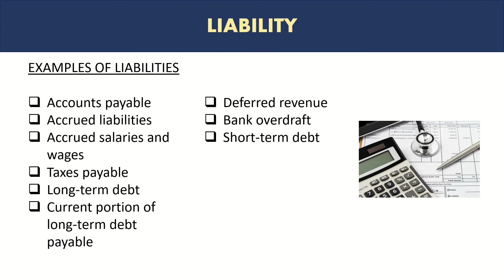Accrued liabilities are recorded in accordance with the accrual concept, which we will cover in a future video. This represents expenses that have been incurred but for which we have not yet received invoices or bills. Good accounting practice is to record those expenses in the period. For example, if the company used electricity in January but the bill hasn't been received by month-end, they record an accrued electricity expense — a debit to expense and a credit to accrued liabilities — in anticipation that the bill will arrive later, but the service has already been received.